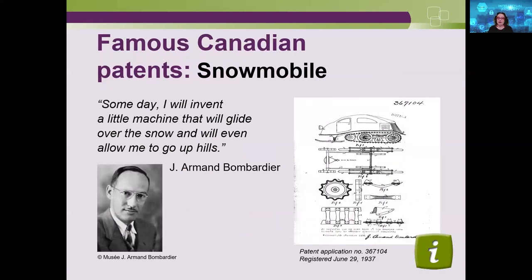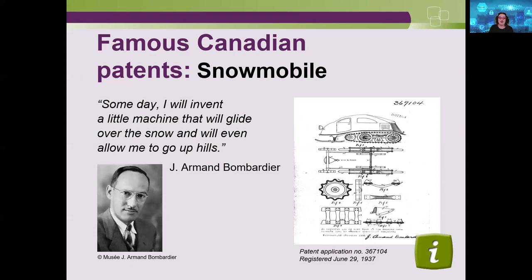Another very famous Canadian patent is the snowmobile, created here in Quebec. The patent drawing shows the gear, sprocket, chain, and all the original components. It was registered in 1937, and you can see that modern snowmobiles are far different — many improvement patents have been registered since then.